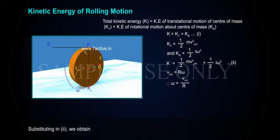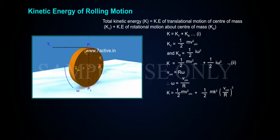Substituting in 2, we obtain K is equal to 1 by 2 M Vcm square, plus 1 by 2 Mk square Vcm by R whole square, K is equal to 1 by 2 M Vcm square of 1 plus K square by R square.